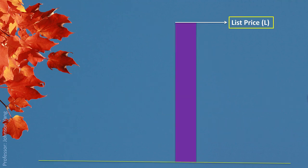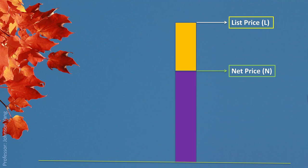Here let's have a look. The original list price is what the seller shows on screen. After negotiation between seller and buyer, the net price is settled at a lower level. So the difference — the orange part — is what we call trade discount. We use L to represent list price, capital N for net price, and capital D for discount. So D equals L minus N.